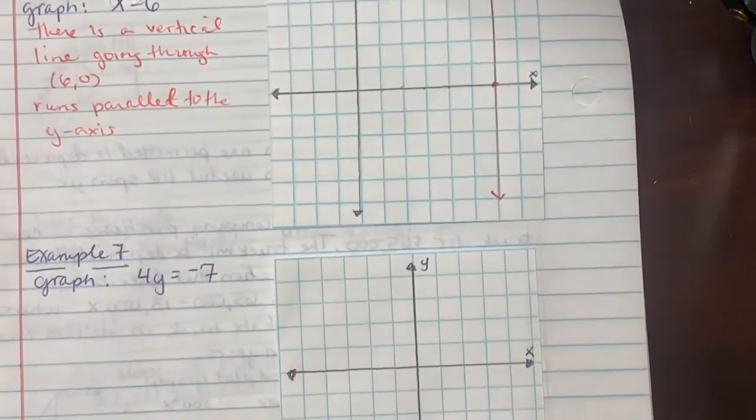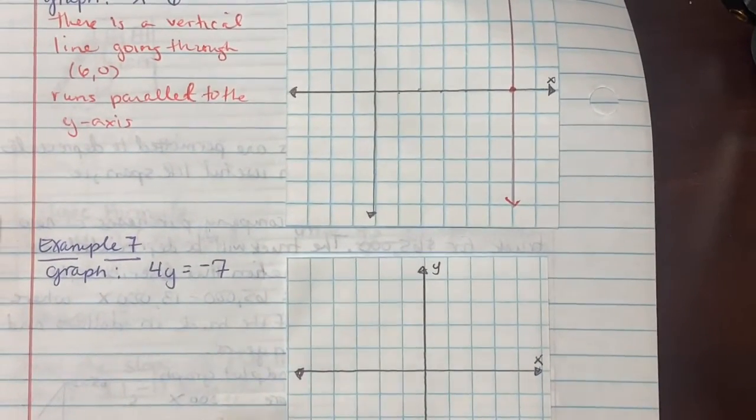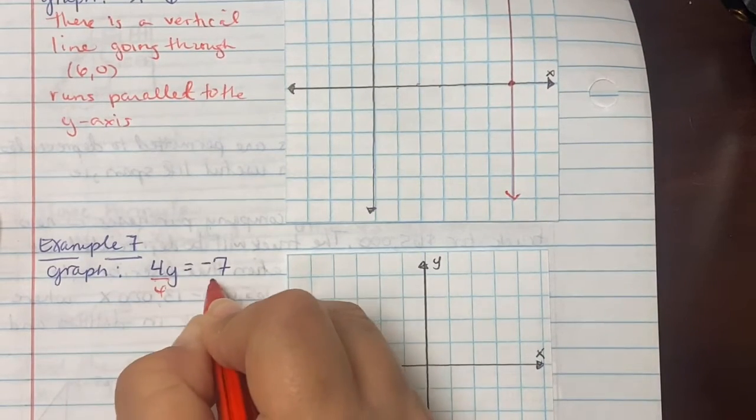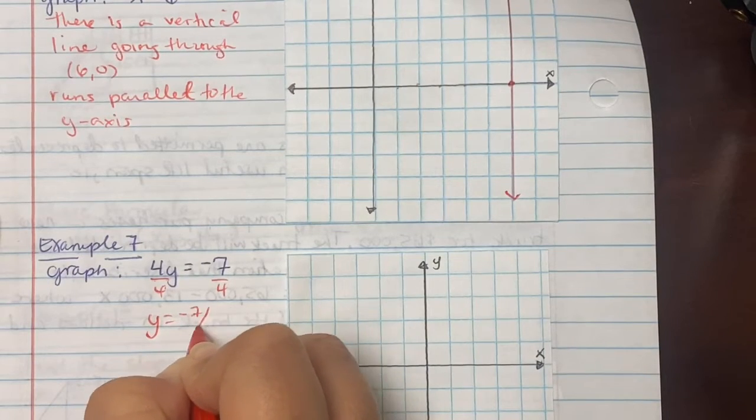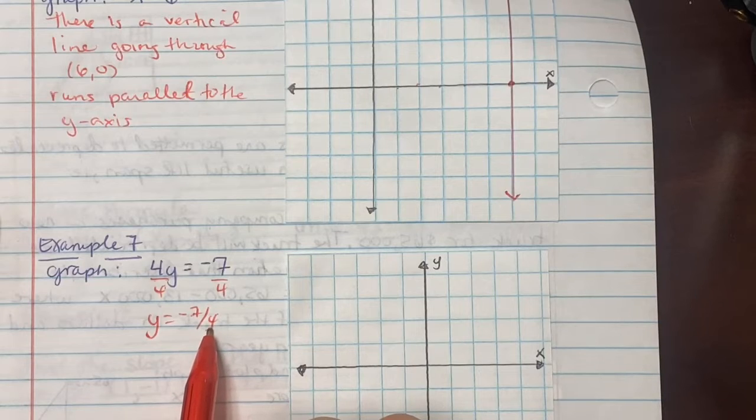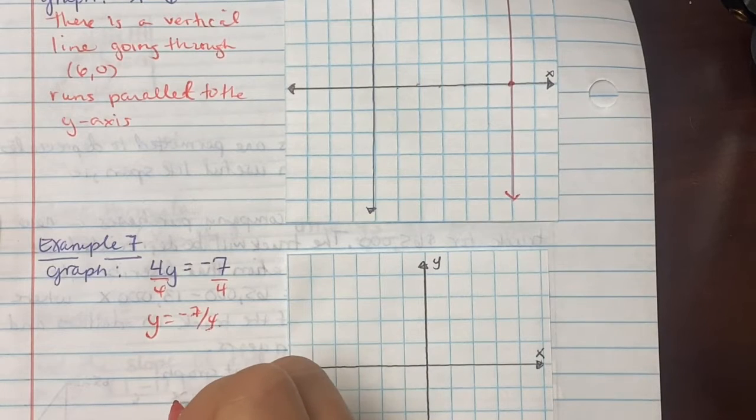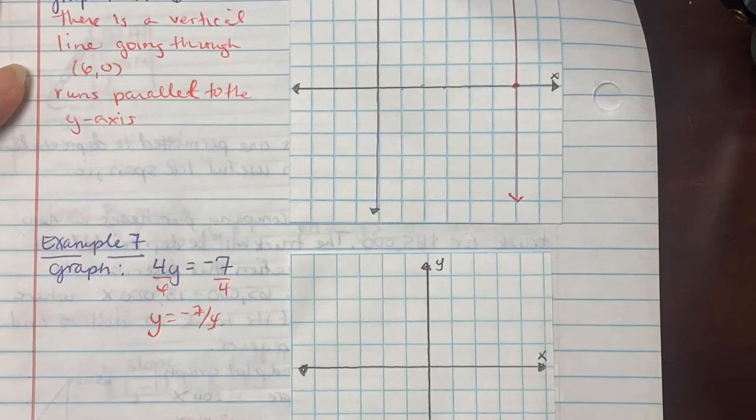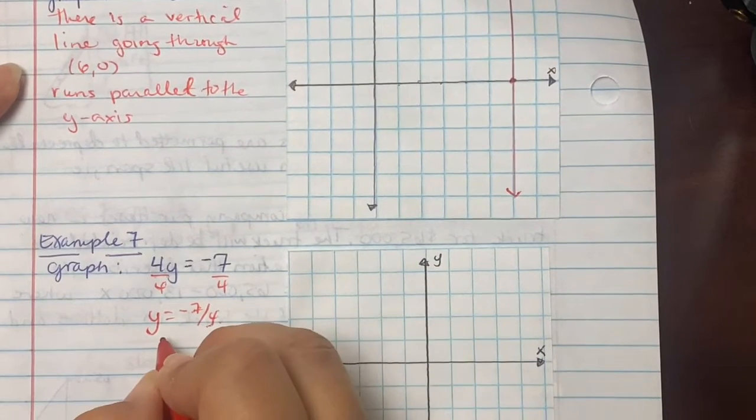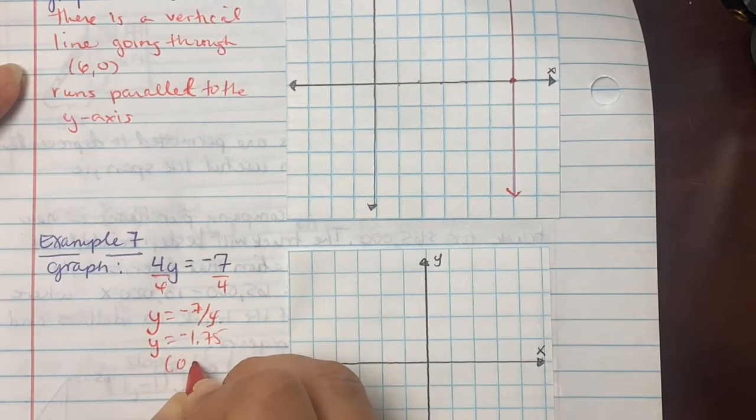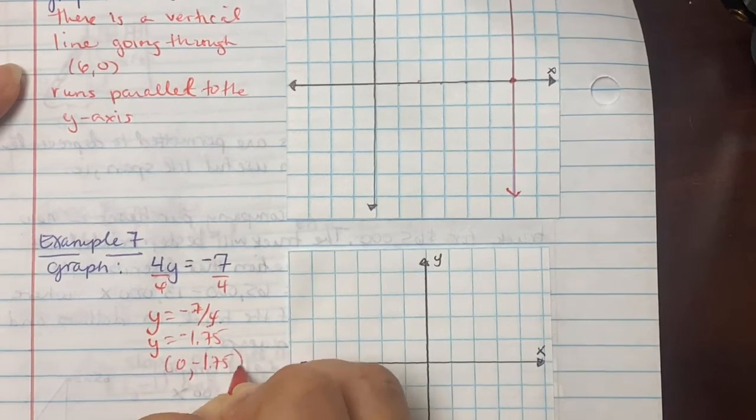In example 7, it says graph 4y = -7. So first thing, you divide both sides by 4. So y is equal to -7/4. So this is going to be somewhere between 1.5 and 2, because 4 goes into 7 one time with a remainder. So it comes out to be exactly 1.75. So we're looking at y equal to -1.75. So (0, -1.75) is what we're plotting.